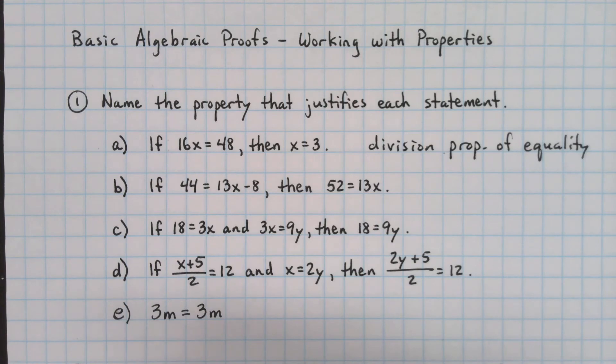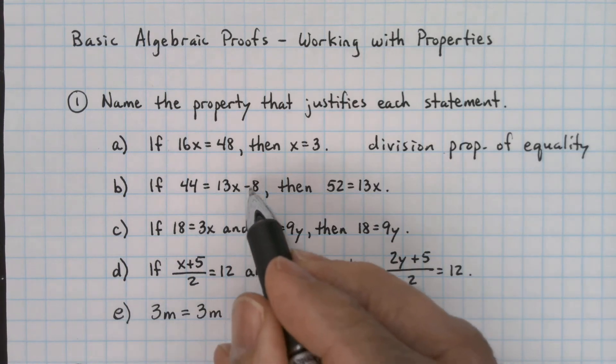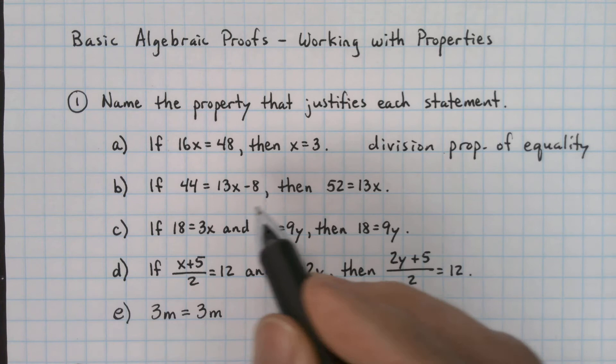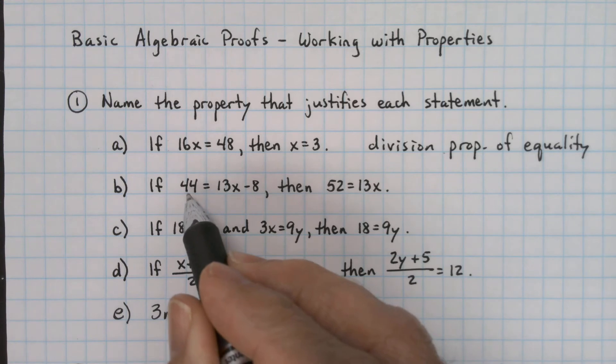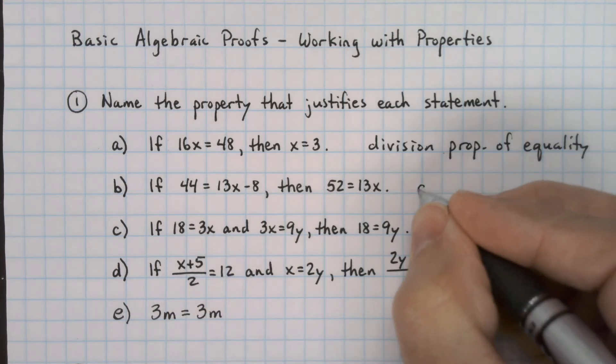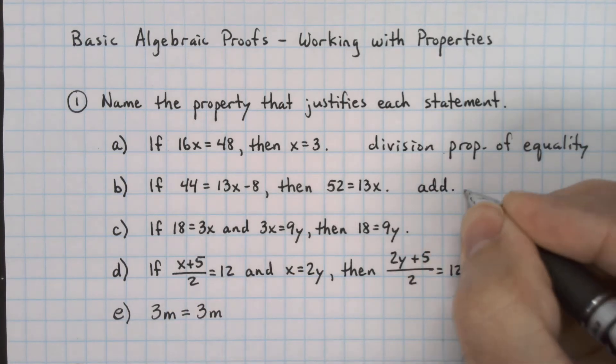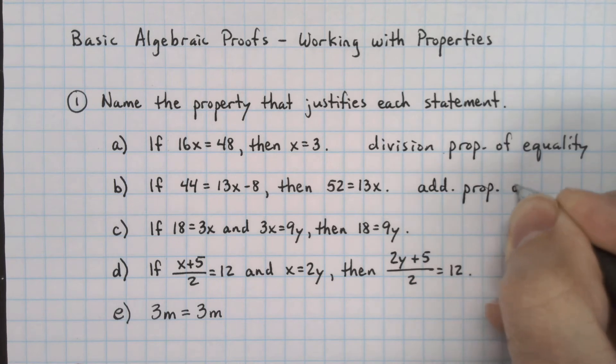Part B. We're solving this equation, it looks like. We're in the process of it, and we have added 8 to the right side to make the minus 8 go away. We've added 8 to the left side. So this is the addition property of equality.